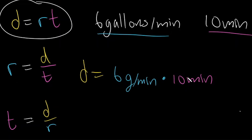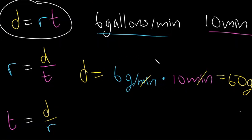6 multiplied by 10 is equal to 60, and we can cancel the minutes, leaving us with gallons. After 10 minutes, the bathtub has 60 gallons of water in it. As you can see, this formula applies to more than just distance.